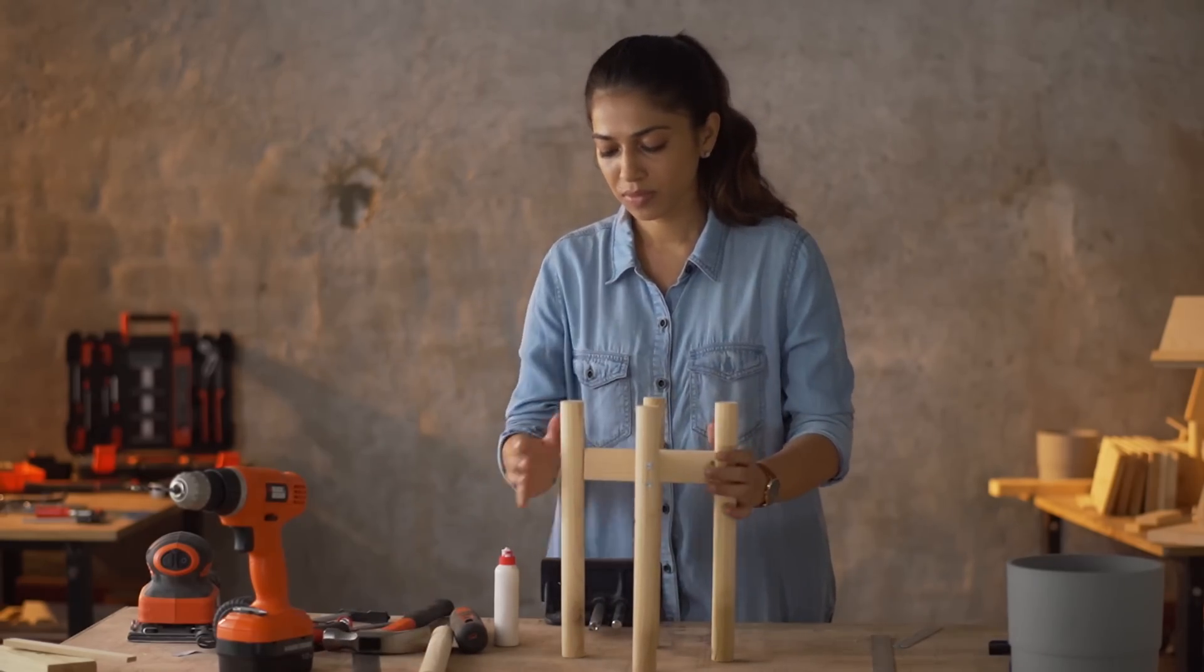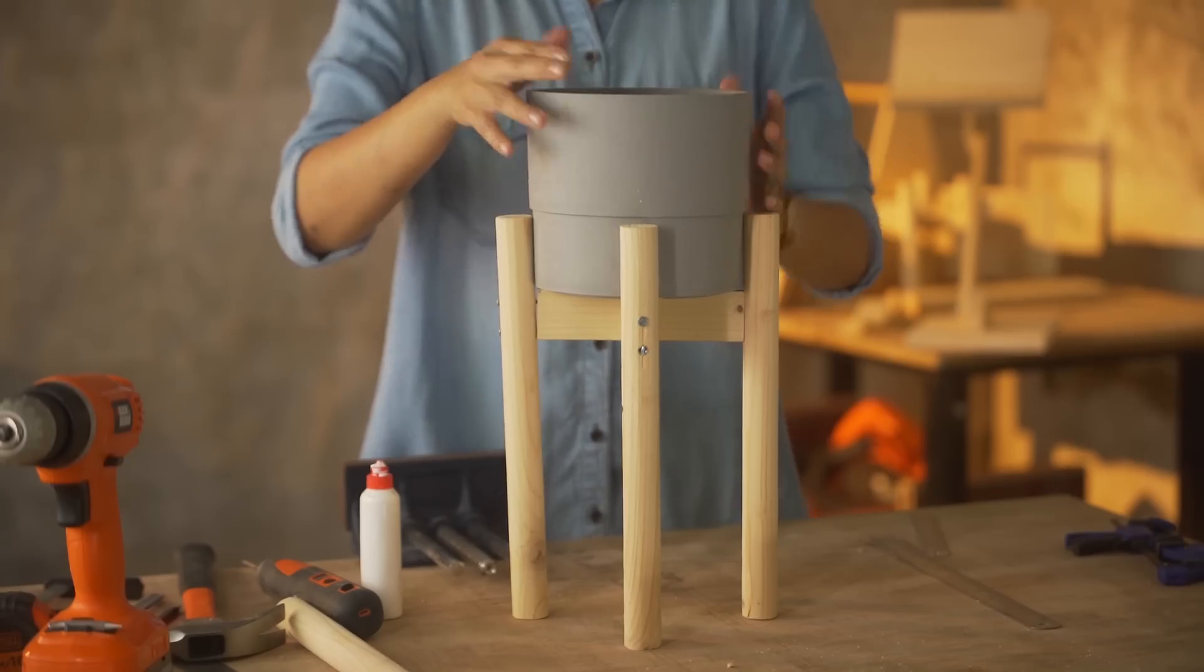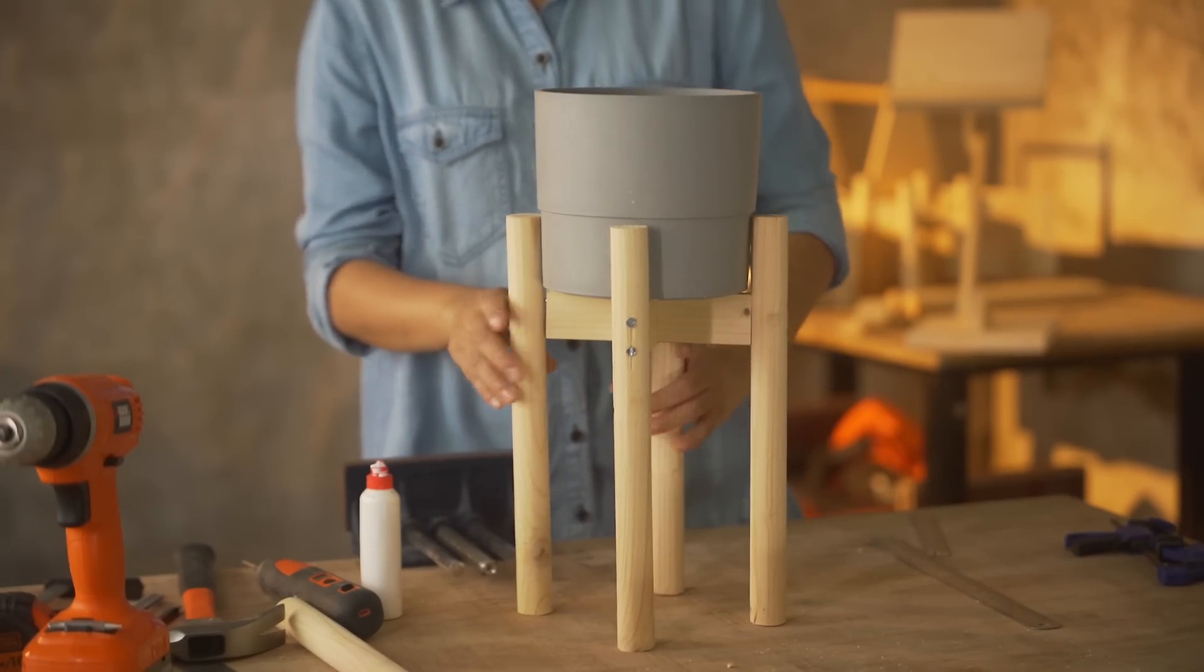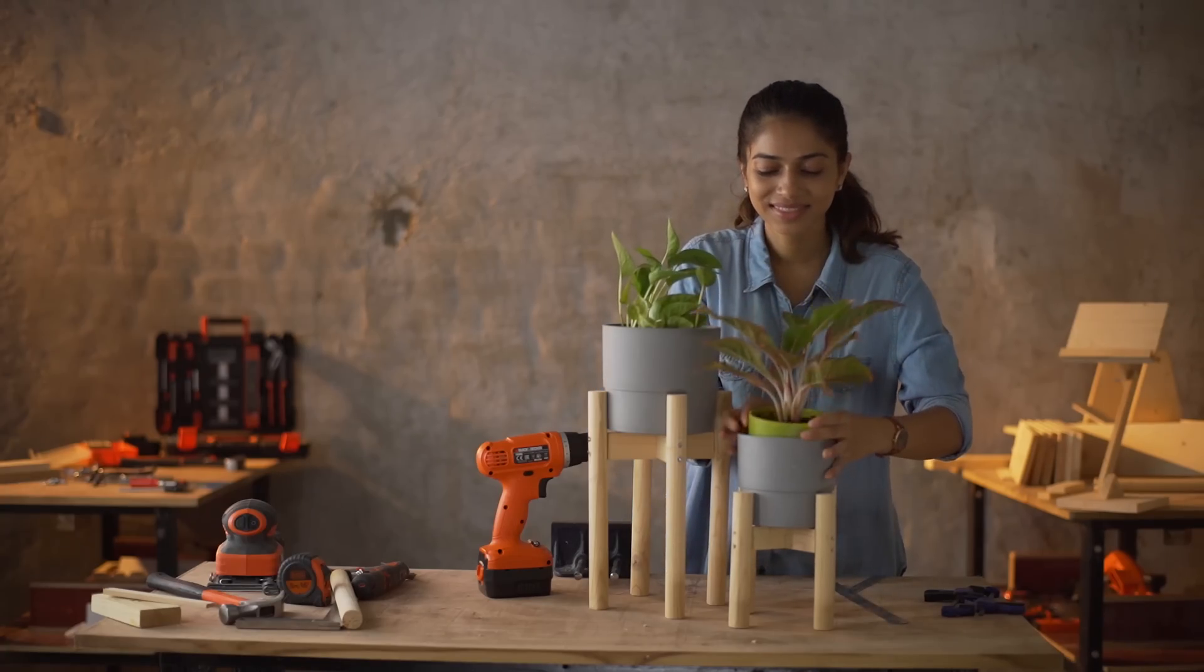And the plant stand is ready. You can choose to stain it with the color of your choice or leave it natural like mine. I created a smaller plant stand with the leftover wood strips the same way.